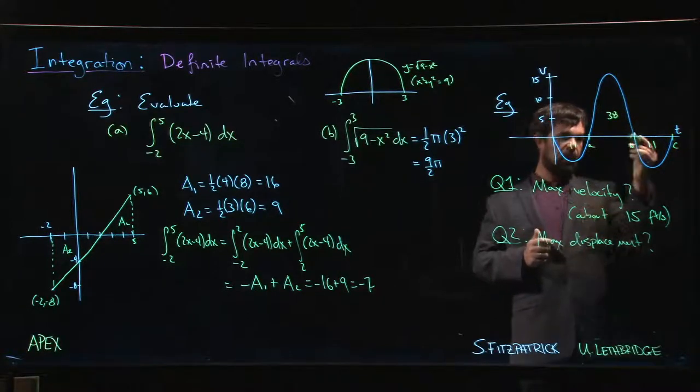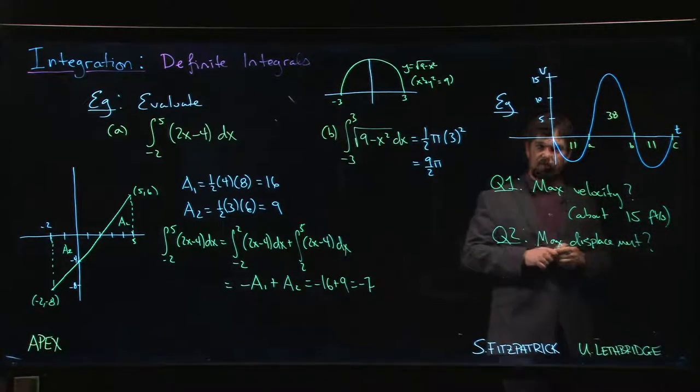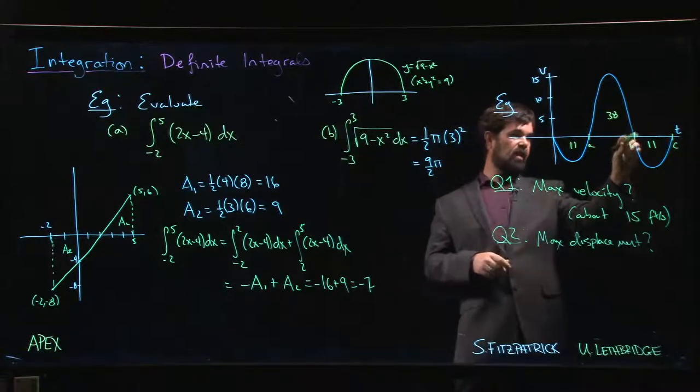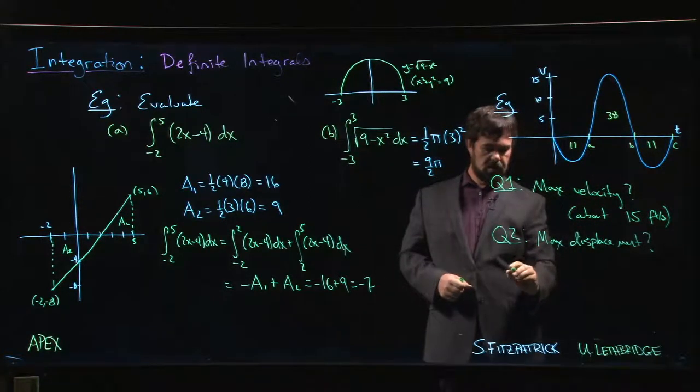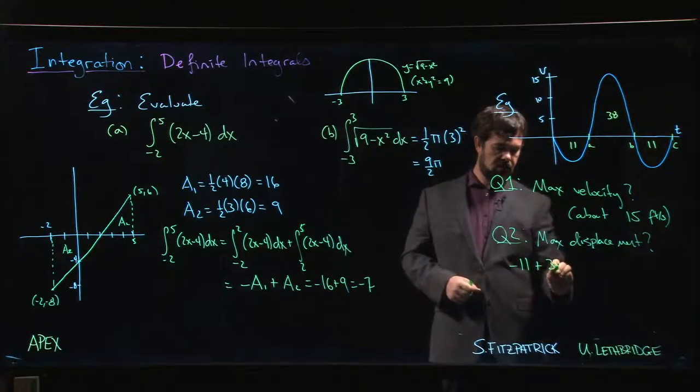What's the max displacement? The furthest we get from our starting point happens here. It's going to be minus 11 plus 38, which is 27. So that's in feet.